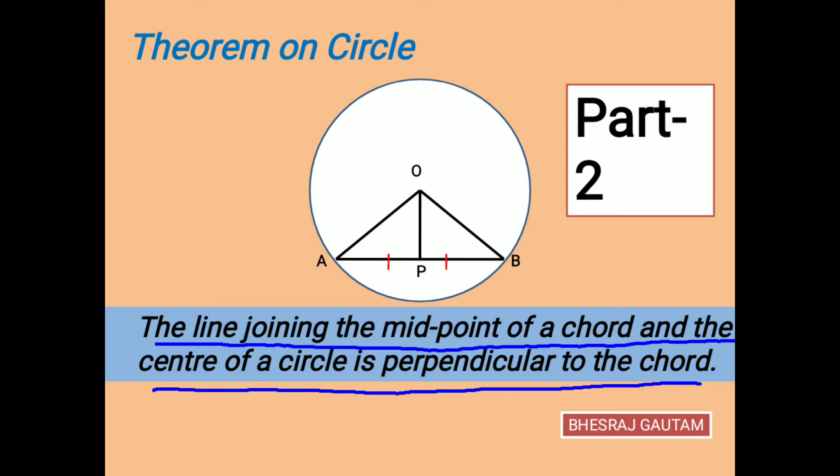To prove this, let us take the support of this figure. Here we are asked to prove OP is perpendicular to the line AB, that is angle APO or angle BPO is 90 degrees.